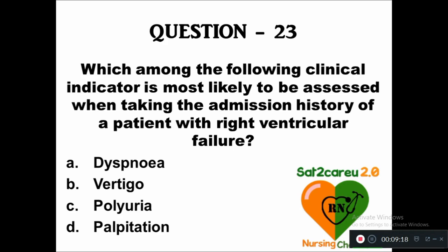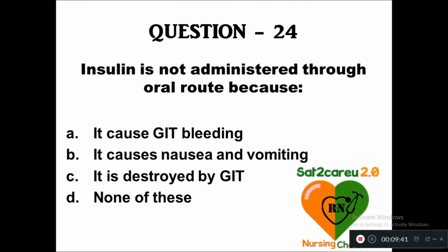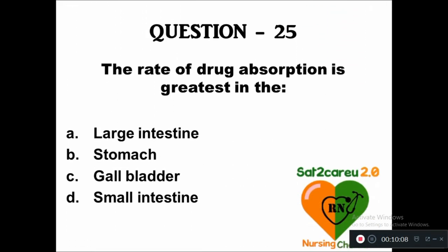Question 23: Which clinical indicator is most likely to be assessed when taking admission history of a patient with right ventricular failure — option A: dyspnea, B: vertigo, C: polyuria, D: palpitation. The correct answer is dyspnea — difficulty in breathing. Question 24: Insulin is not administered through oral route because — option A: it causes GIT bleeding, B: it causes nausea and vomiting, C: it is destroyed by GIT secretions, D: none of these. The right answer is it is destroyed by secretions in the gastrointestinal tract.